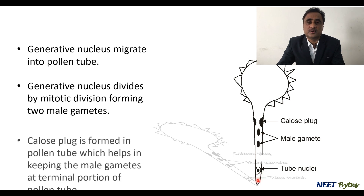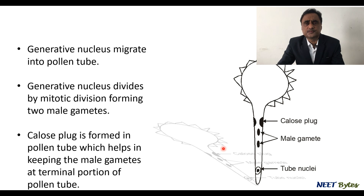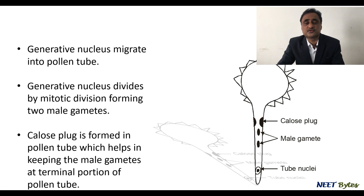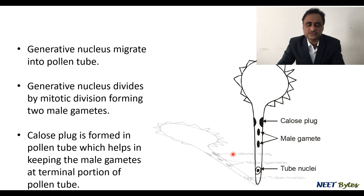The generative nucleus divides by another mitotic division to form two male gametes. The pollen tube keeps growing and eventually reaches the micropyle. To keep the male gametes at the tip of the pollen tube for fertilization, callose plugs are consistently formed. These callose plugs prevent the male gametes from moving back, ensuring they remain at the tip.